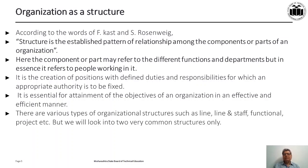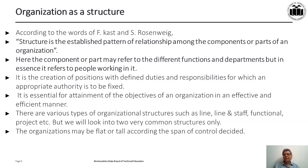There are various types of organizational structures such as line, line and staff, functional, project, etc., but we will look into two very common structures. Organization may be flat or tall according to the span of control — the number of people working under one position. If fewer people work under one manager, more levels are needed, making a tall organization. Where more people work under one manager, it becomes a flat organization with fewer levels.